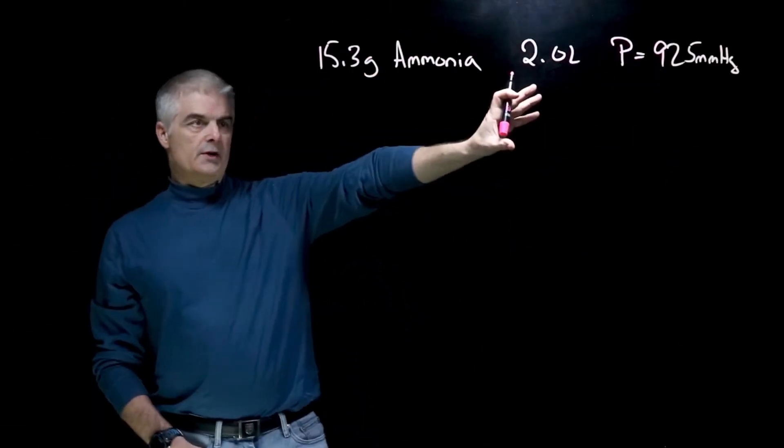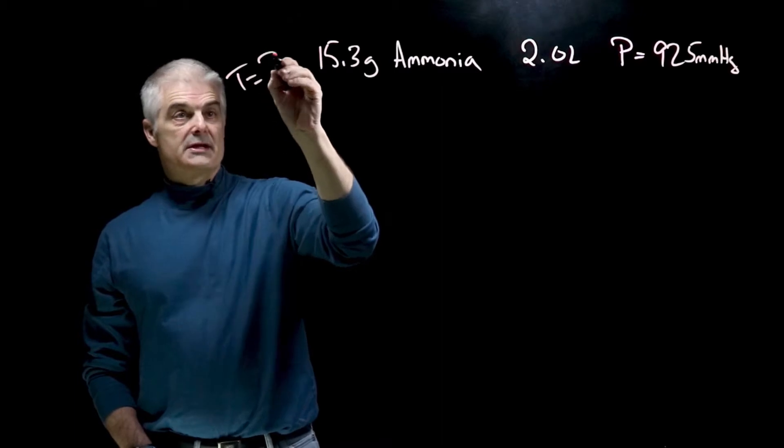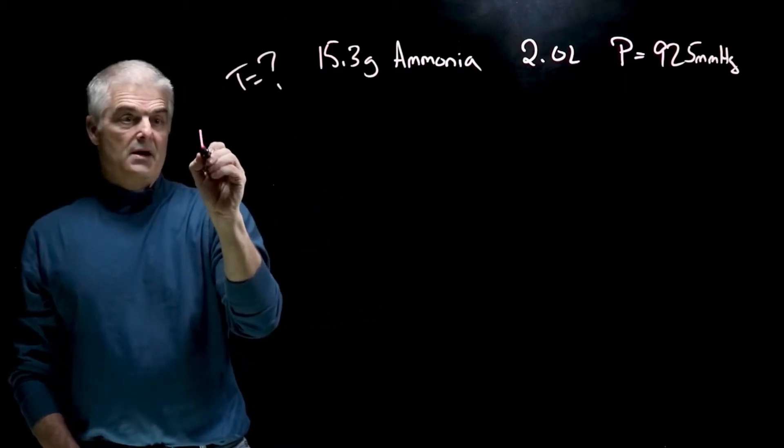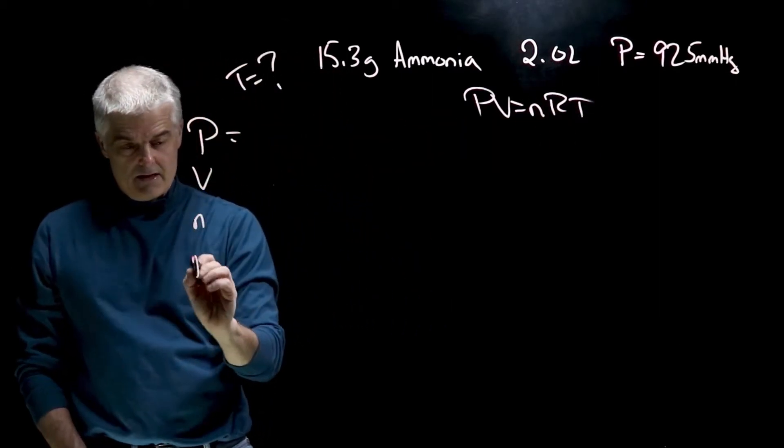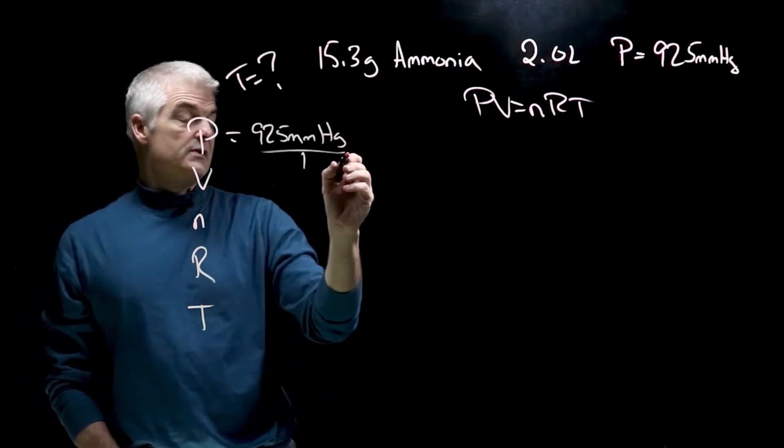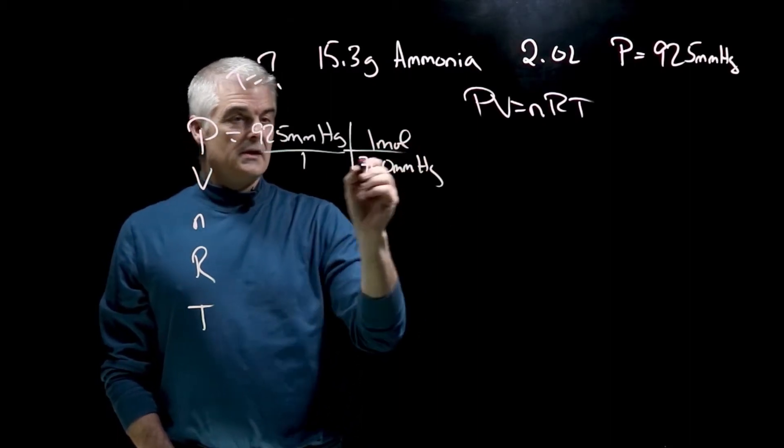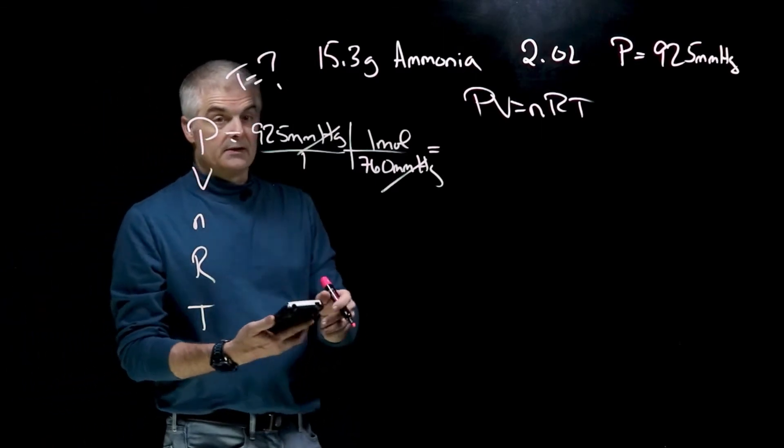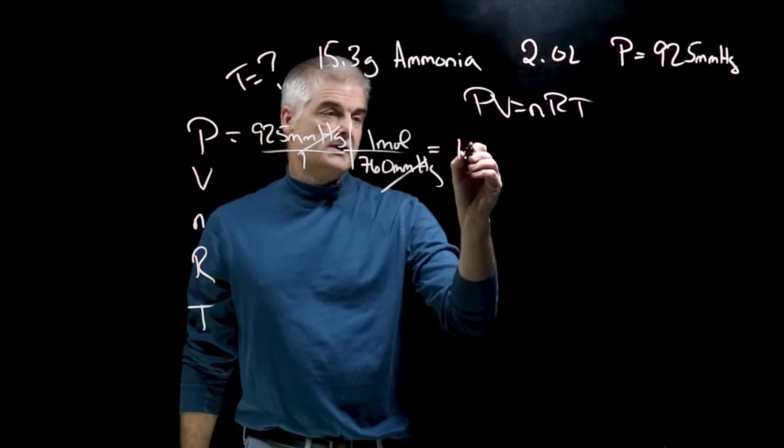So you can read the question here. We have 15.35 grams of ammonia. It's in a 2 liter container. A pressure of 925. They're asking for what's the temperature. Now here's a bit of a tricky question. We've got to try to figure out all the things. So let's do P. The equation is going to be PV equals NRT. So P equals 925 millimeters of mercury. Now the trick on this is, remember, it has to be converted to ATMs. So you're going to take 760 millimeters of mercury in one mole. The millimeters of mercury cancel and we get our calculator out. I'm just going to take 925 divided by 760. And that's 1.27 ATMs.